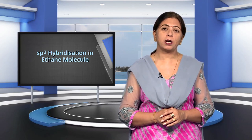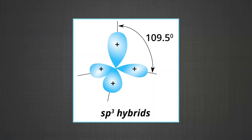SP3 hybridization in ethane (C₂H₆): in ethane, both carbon atoms assume the SP3 hybrid state. One of the four SP3 hybrid orbitals of each carbon atom overlaps axially with a similar orbital of the other carbon to form an SP3–SP3 sigma bond, while the other three hybrid orbitals of each carbon are used in forming SP3–S sigma bonds with hydrogen atoms. The carbon–carbon sigma bond length in ethane is 154 picometers and each C–H bond length is 109 picometers.